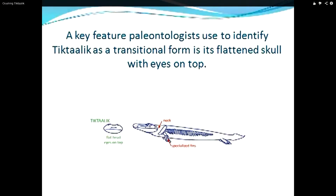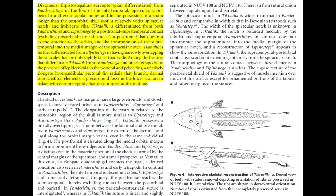We get to the crux of David's argument early in his video — that Shuman and Deshler identified Tiktaalik as transitional based on its having a compressed head with dorsally oriented eyes. So let's examine that claim by taking a peek at the original description. I posted the source paper in the description, so go ahead and pause the video and read the diagnosis. Completely absent from that diagnosis is any reference to the flatness of the skull or the orientation of the eyes.